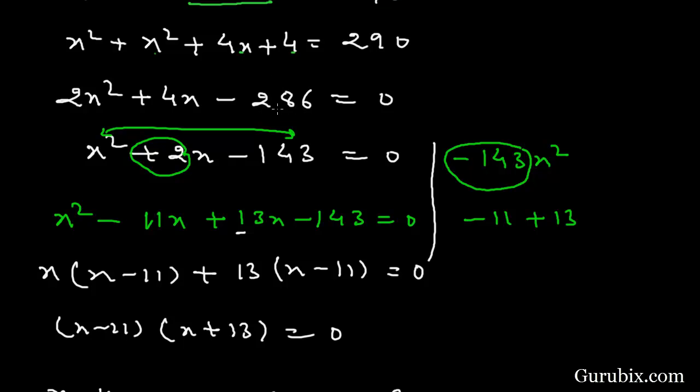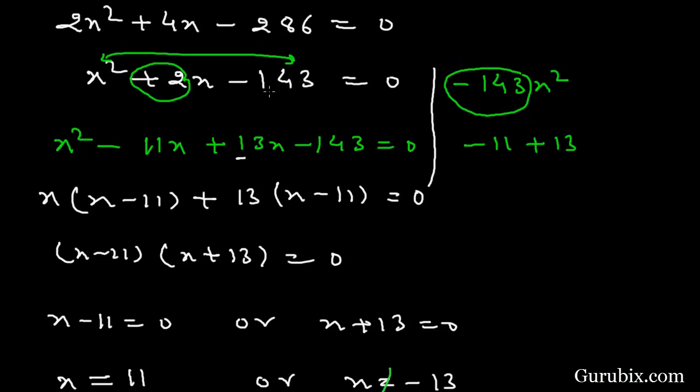Then 2x squared plus 4x minus 286 is equal to 0. And now we shall factorize this quadratic equation by using middle term splitting method. We have split the middle term in such a way that we get x squared plus 3x minus 143 equals to 0.